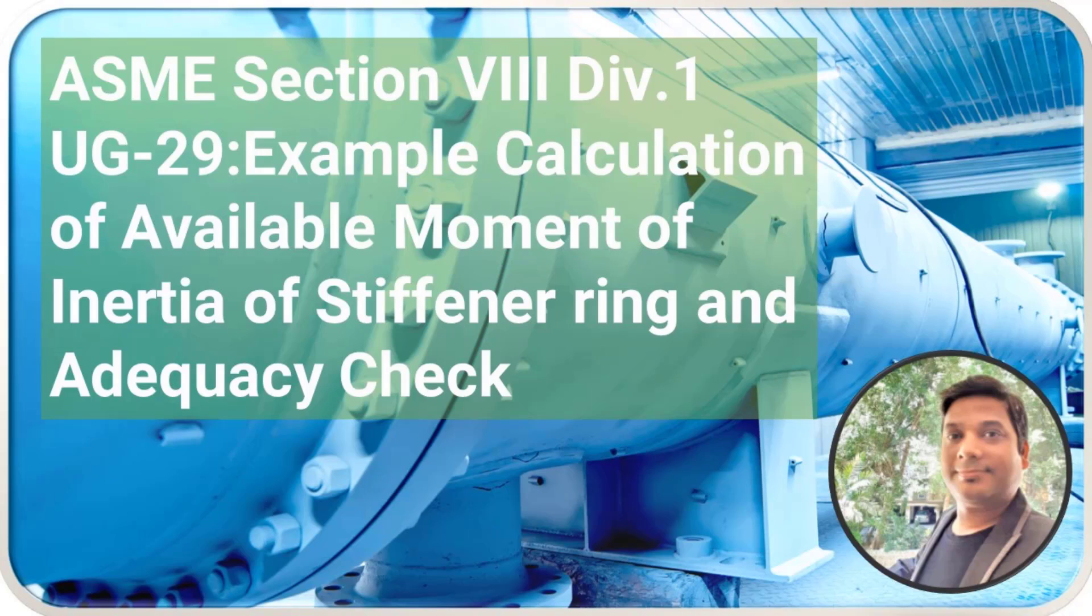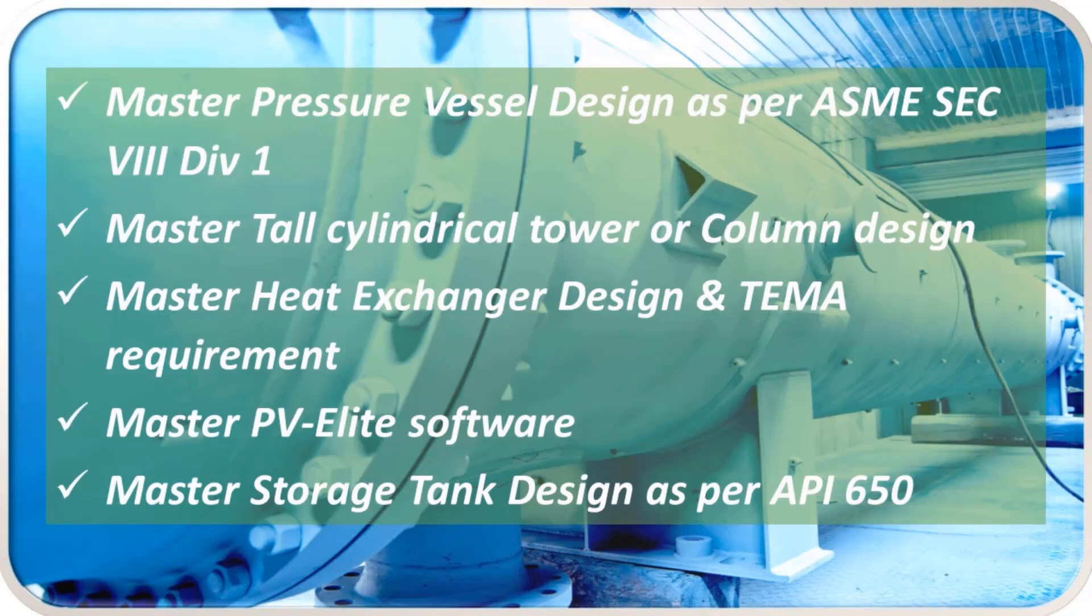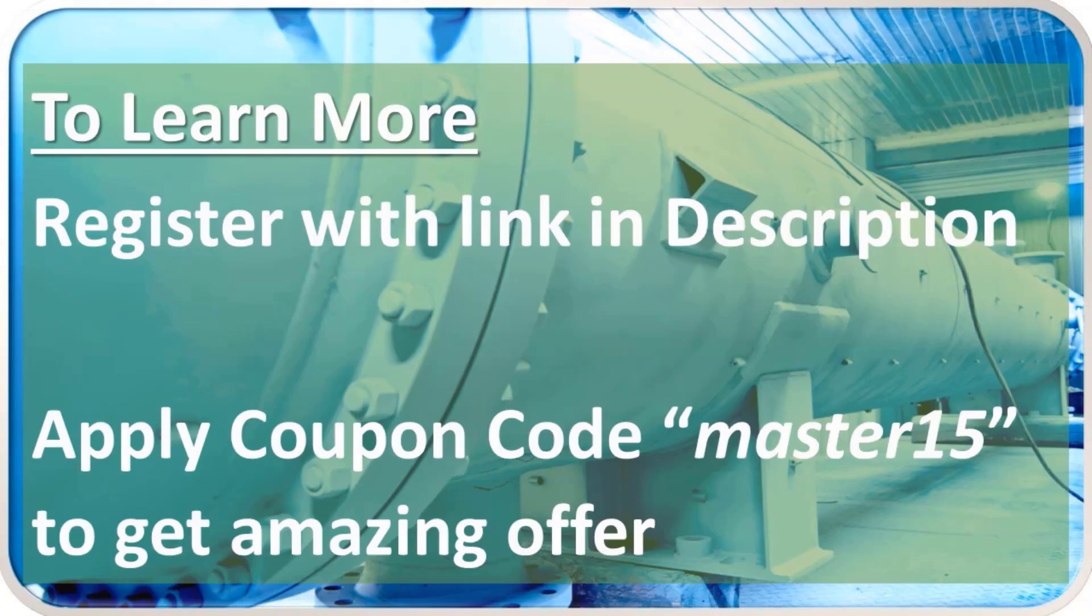Hello everyone. In this lecture, we are going to see ASME Section 8, Division 1, UG 29, example calculation of available moment of inertia of stiffener ring and adequacy check. We have all these courses available on our Thinkific platform. To learn more about these courses, register with the link given in the description.